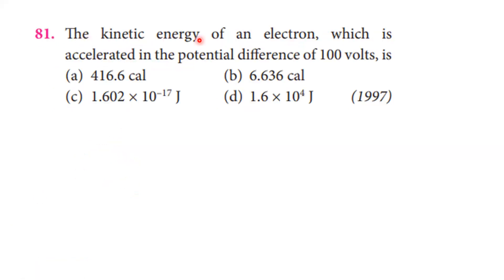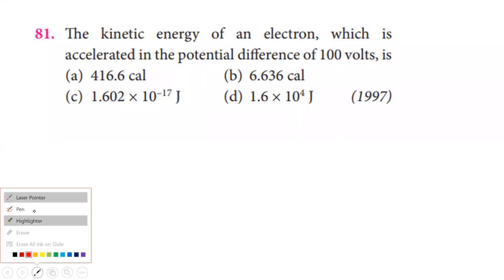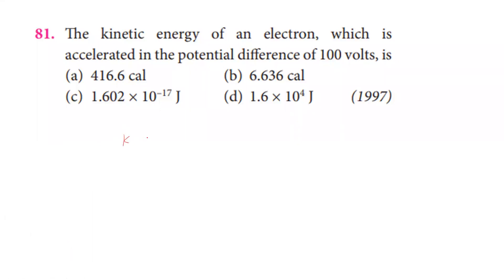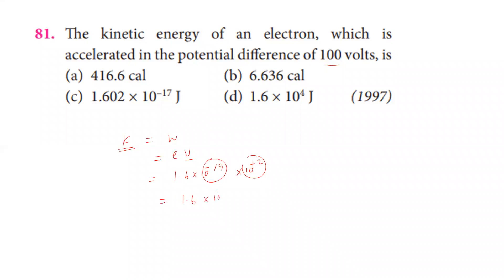The kinetic energy of an electron accelerated through a potential difference of 100 volts: the rise in kinetic energy equals work done, which equals e times V. Substituting, that is 1.6 times 10 to the power minus 19 coulombs times 100 volts, which equals 1.6 times 10 to the power minus 17 joules.